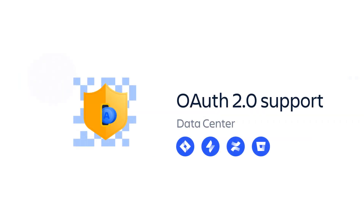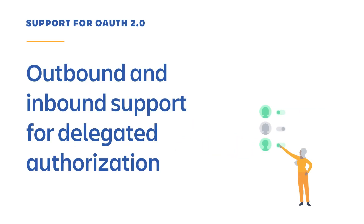It's for these reasons and more that we're excited to announce that we will be providing support for OAuth 2.0 in Data Center. Support will come in two forms, with both outbound and inbound integrations being addressed, meaning that our Data Center products will be addressing use cases where external systems will be able to interact with Atlassian products, and vice versa.